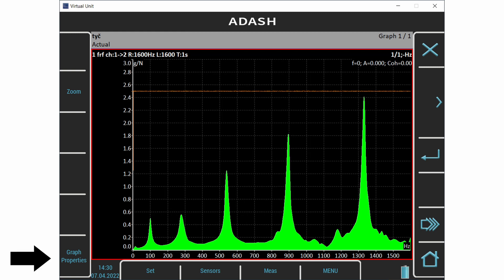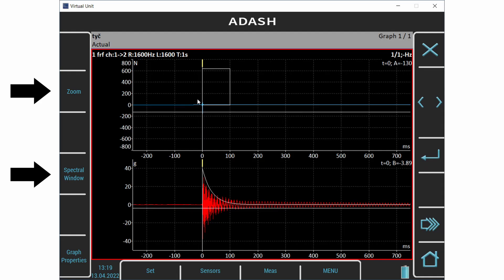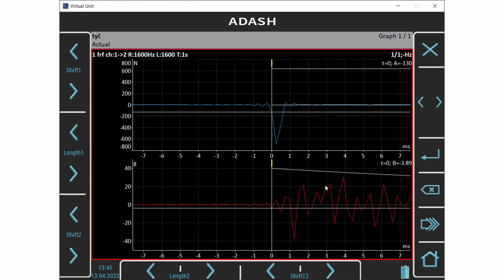Press the graph properties button. Set the view parameter to the time. Two time signals from both channels are displayed. I make the zoom of signals. Then I push the spectral window button. Now we can shift the windows and change their length. Firstly I set the transient window on channel 1.